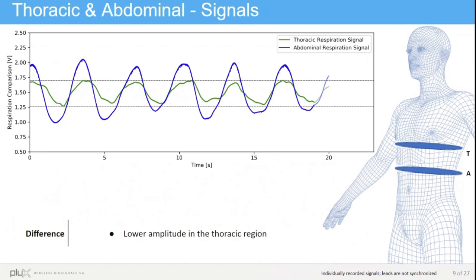In this plot, the difference in amplitude is even more evident. The green signal is the positioning in the thoracic region and the blue signal is the placement in the abdominal position. We can see that the peak-to-peak amplitude is much lower for the thoracic position.